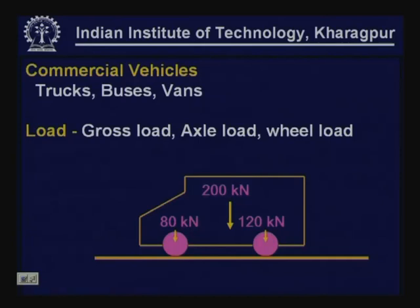Typically, commercial vehicles include trucks, buses, and vans. When referring to a commercial vehicle, we consider its gross load, axle load, and wheel loads. The load is ultimately transmitted through the wheels to the pavement, though agencies like road transport authorities are usually interested in the gross load carried.